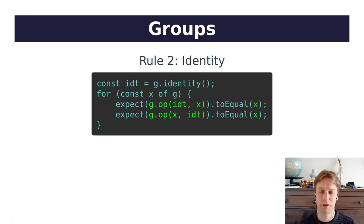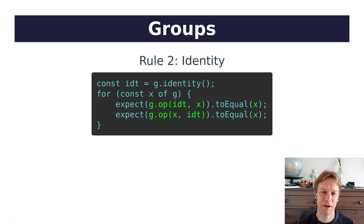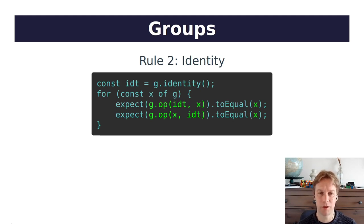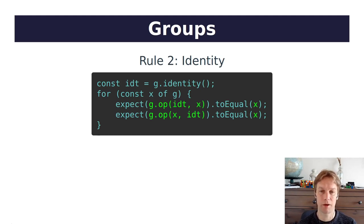The second rule is called identity. An identity is a thing that doesn't change things when you do the operation with it. We make a variable called IDT which is the identity element of G. The point of this rule is that there's one thing called the identity of G which works for all the members of G. We get hold of the identity, loop through the members of G into X, and for each X, when you combine IDT with X you get X. And it doesn't matter whether you combine it with IDT first or IDT second — that's why there are two lines here.